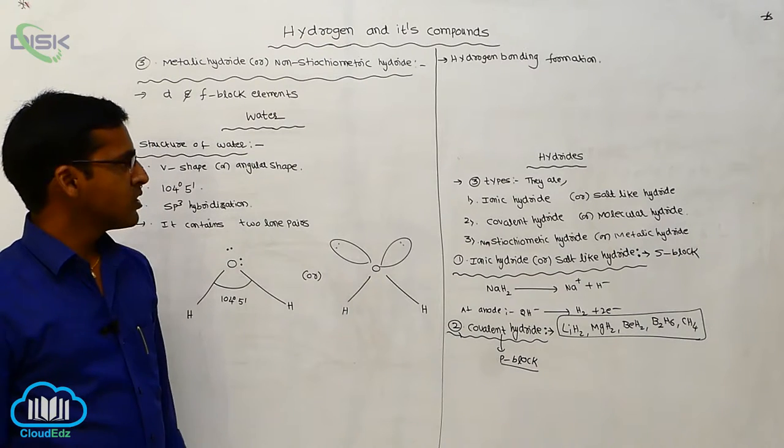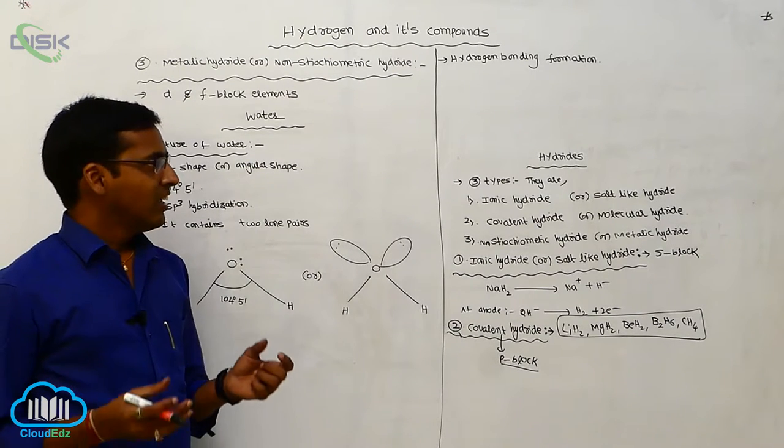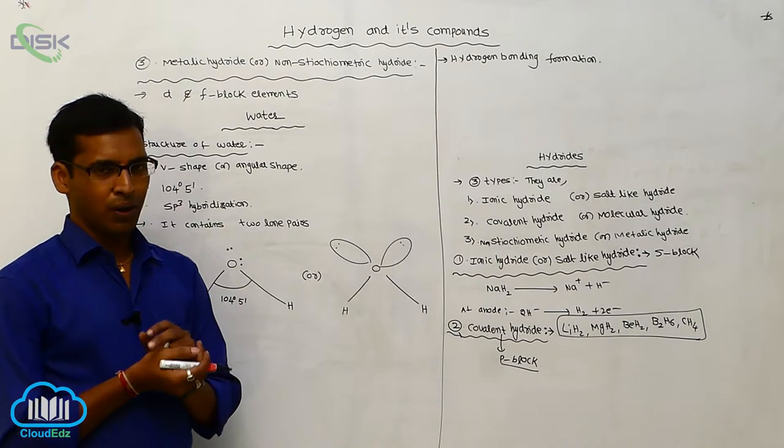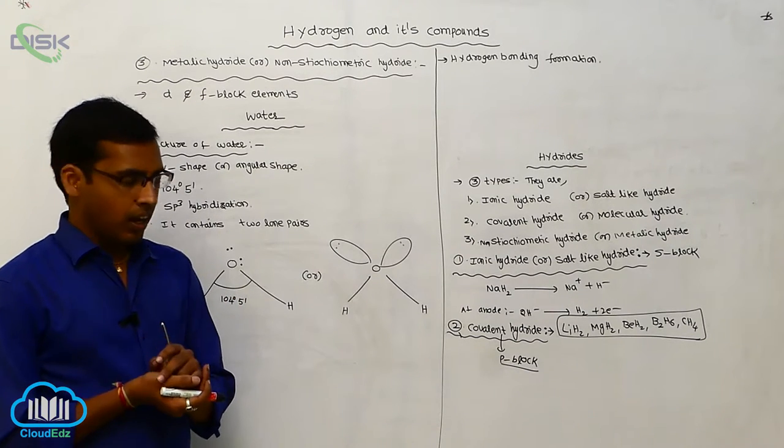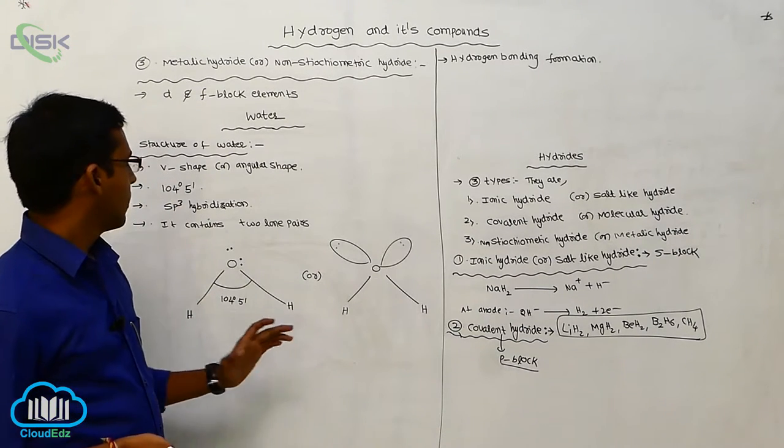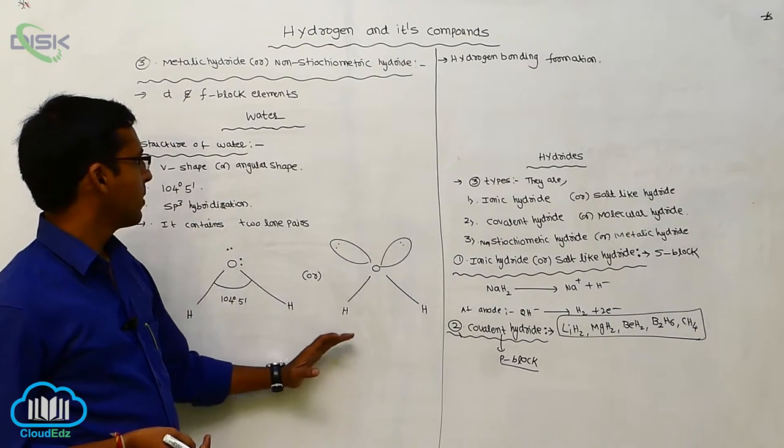Due to the formation of hydrogen bonding, it has more melting point and boiling point. That is the reason the water contains more melting point and boiling point.